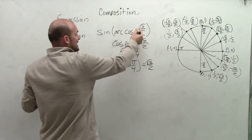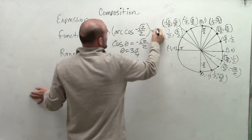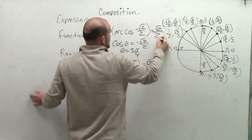Therefore, the sine of arc cosine of negative square root of 2 divided by 2 is equal to the positive square root of 2 divided by 2.